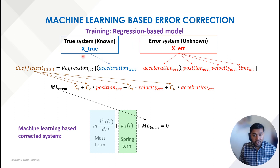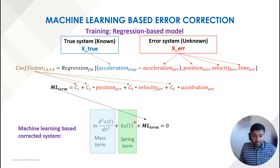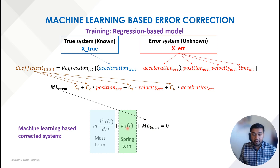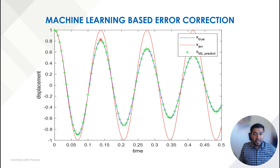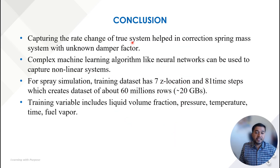In the unknown system we are trying to calculate the damping term using the machine learning based correction. For the regression model, we provide as input the acceleration of the known system and the acceleration, position, and velocity of the unknown system, trying to find the coefficient and incorporating this machine learning term into the governing equation itself to solve for the position.